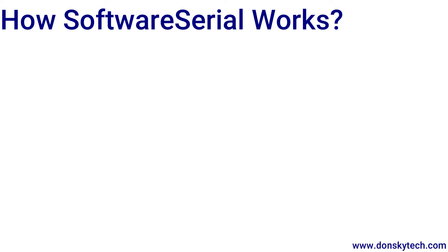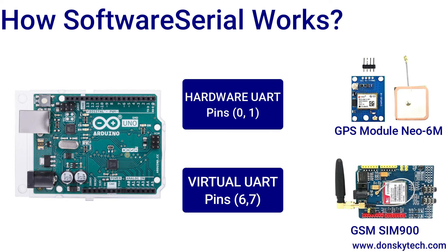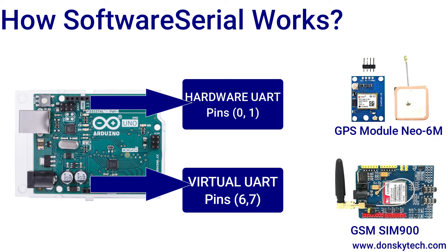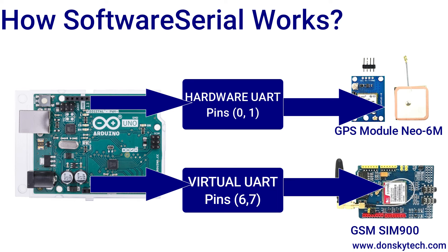How does software serial work? In software serial, we use other GPIO pins of your microcontroller to act as a virtual UART port. In this manner, we can add multiple UART ports to your microcontroller, especially if you're using an Arduino Uno where there is only one hardware UART. Everything in software serial is implemented using software, so the sending and receiving of serial messages are handled by the software serial code.